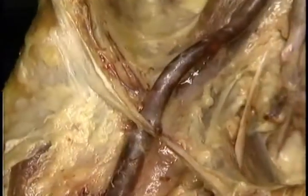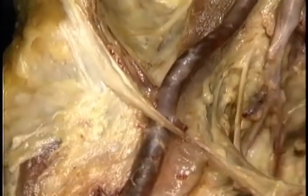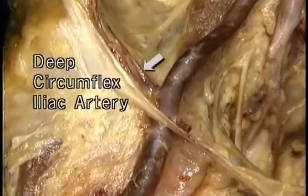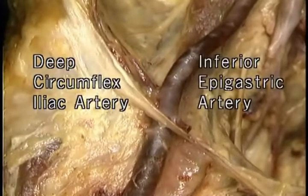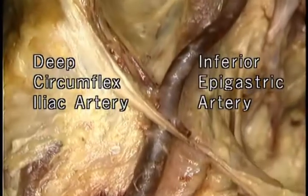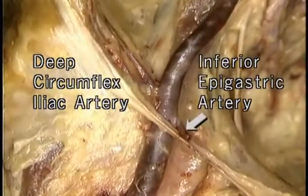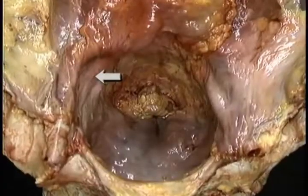Just before passing beneath the ligament, the external iliac gives off two branches: the deep circumflex iliac laterally and the inferior epigastric medially.